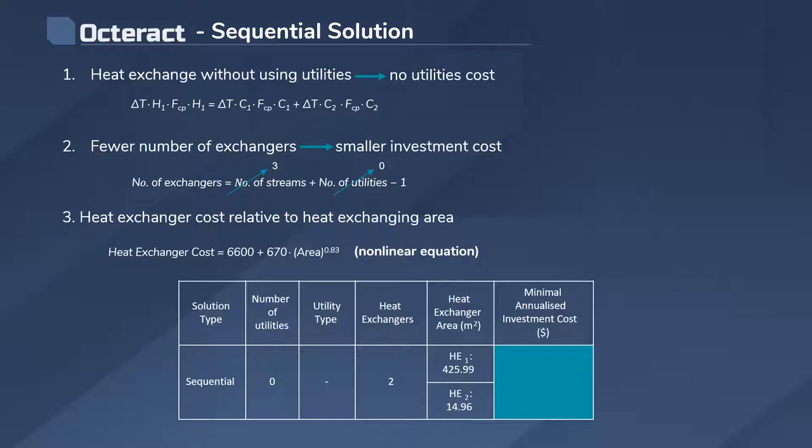Having made these decisions, the minimal annualized investment cost for the network is US$121,500. What will this network look like? Like this.